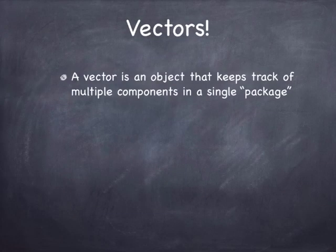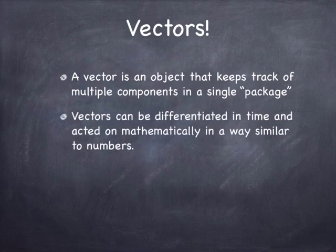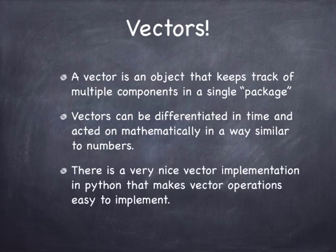The answer is, we treat state as a vector. A vector is basically an object that has multiple components that we can keep track of as a single object. Vectors can be differentiated, they can be multiplied, they can be added and subtracted. You can do a lot of things with vectors that you can do with regular numbers. The other nice thing is that there's a very nice vector implementation. It's called the array object in Python that we'll be using. And we can take advantage of the fact that all the business of adding and multiplying and dividing and so on with vectors has already been taken care of, so that our code can remain quite simple.